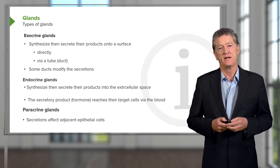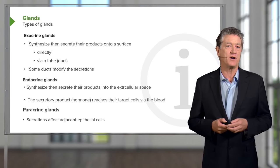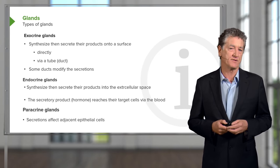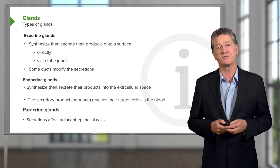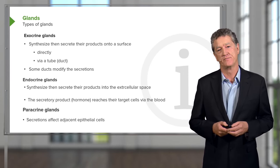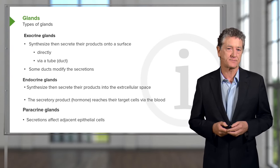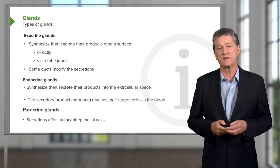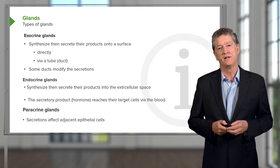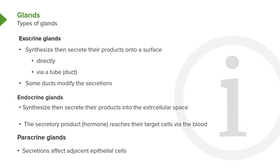Another way in which glands are classified is that some cells can secrete products that affect their neighbours. These are called paracrine glands. These paracrine glands secrete their products into the underlying interstitial space, which diffuses to nearby cells and affects their function — we'll deal with those in another lecture. So basically, glands are classified on the way in which they secrete their products and the way those products reach their target tissues: either through a duct in exocrine glands, via the blood in endocrine glands, or via diffusion along local interstitial space to affect neighbouring cells.